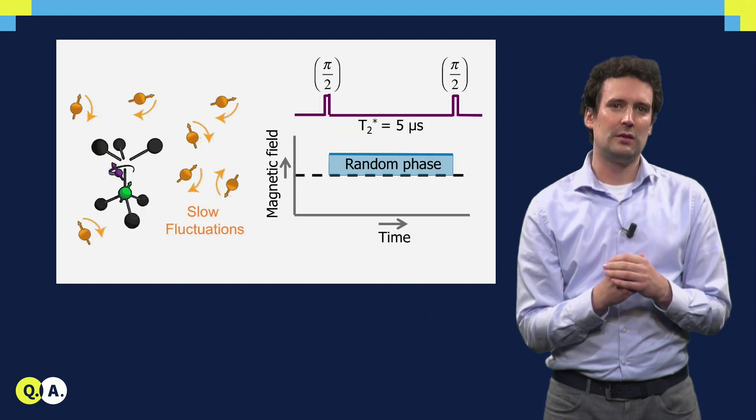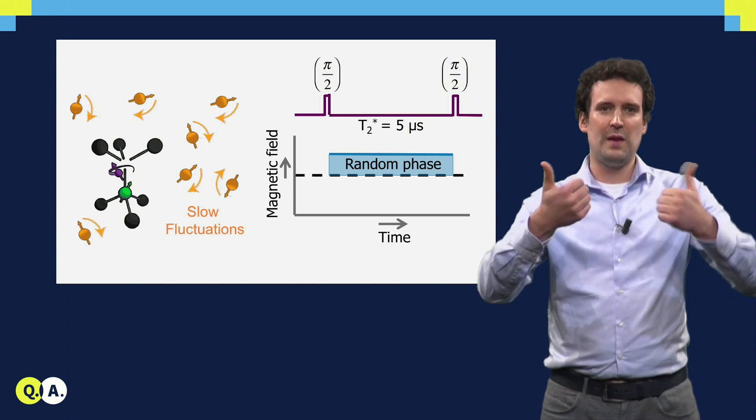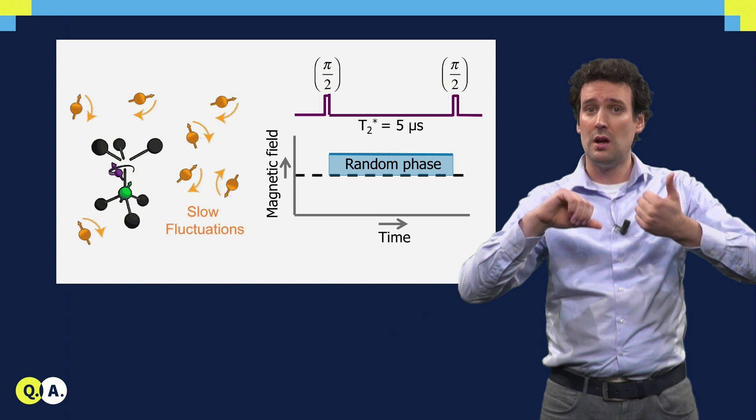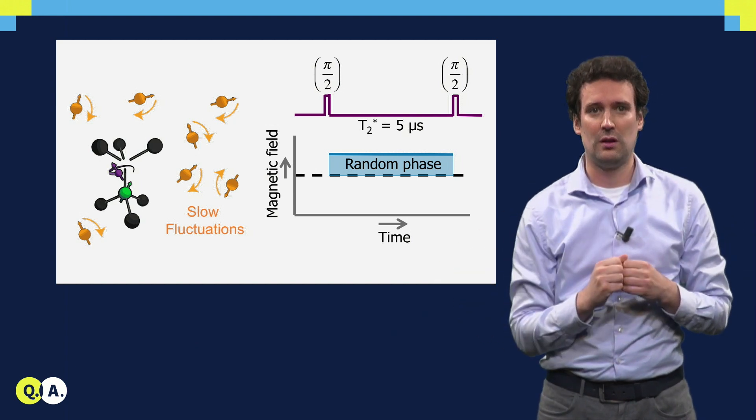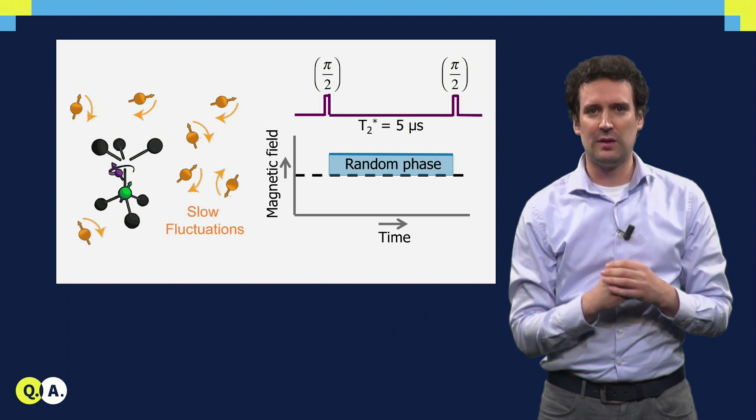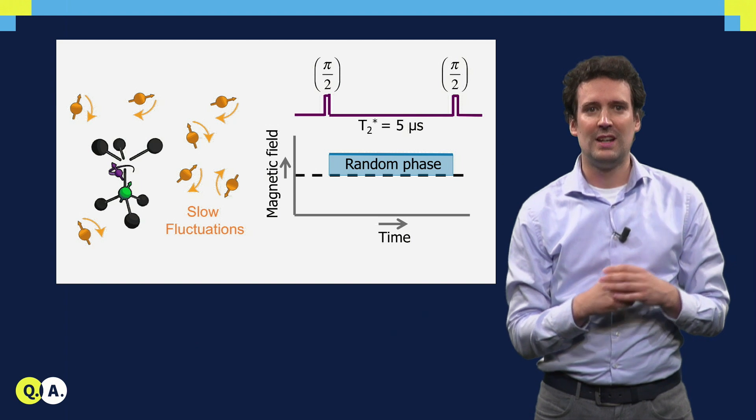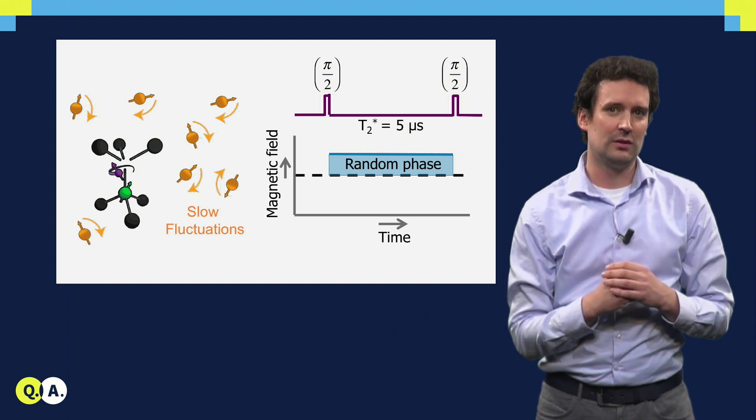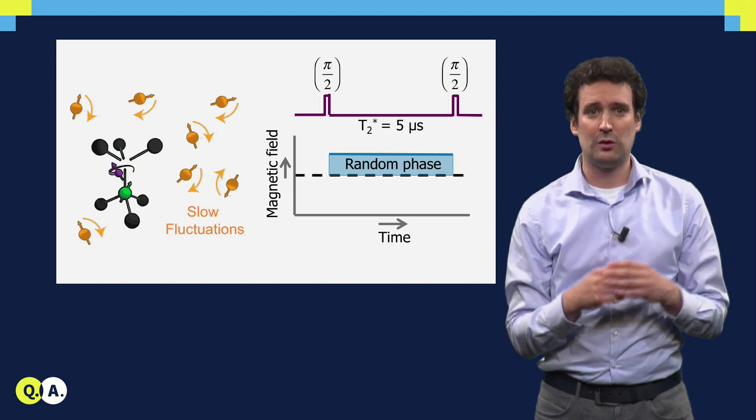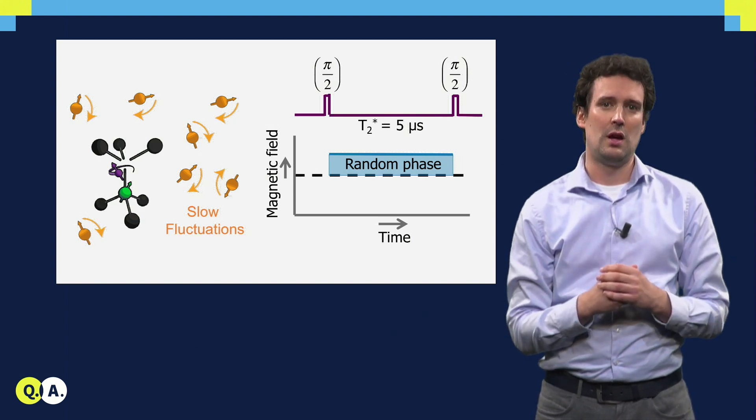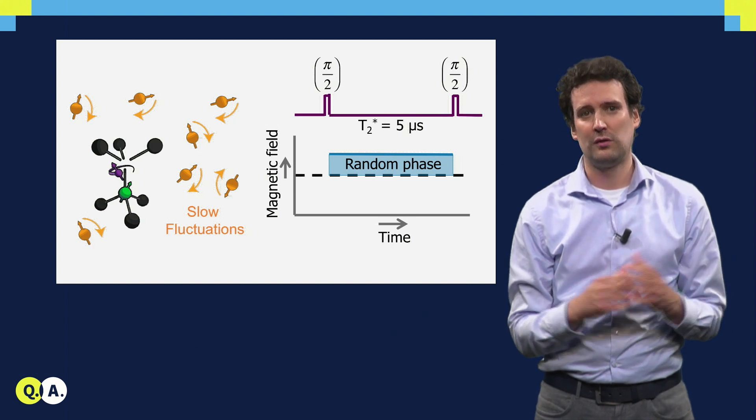Normally speaking, these nuclear spins are a source of decoherence. They flip-flop around randomly and create a slowly varying magnetic field on the NV center. So if we prepare the NV center in a quantum superposition state, then this fluctuating magnetic field changes the NV energy levels, and that causes its phase evolution to become random so that the quantum state is lost. And this dephasing time is only about 5 microseconds, it is not that long.